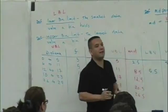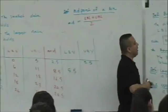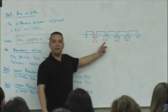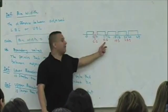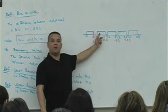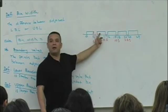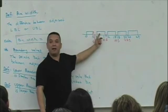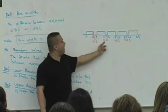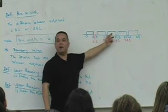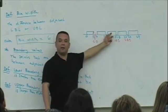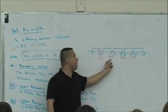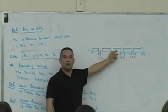And the interesting part is that this pattern repeats itself in that 11.5 is larger than every value in the second bin, which makes it an upper boundary value for which bin? Second, but 11.5 is smaller than every value in the third bin. So that same value, 11.5, is a lower boundary value for the third bin.